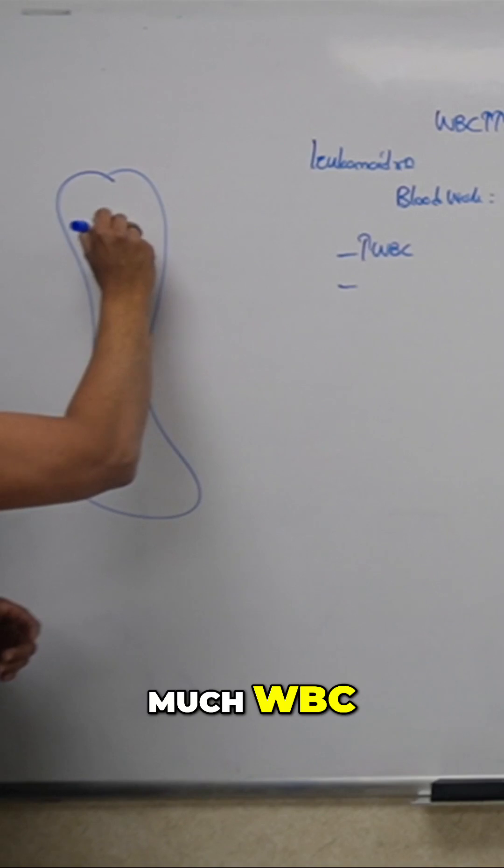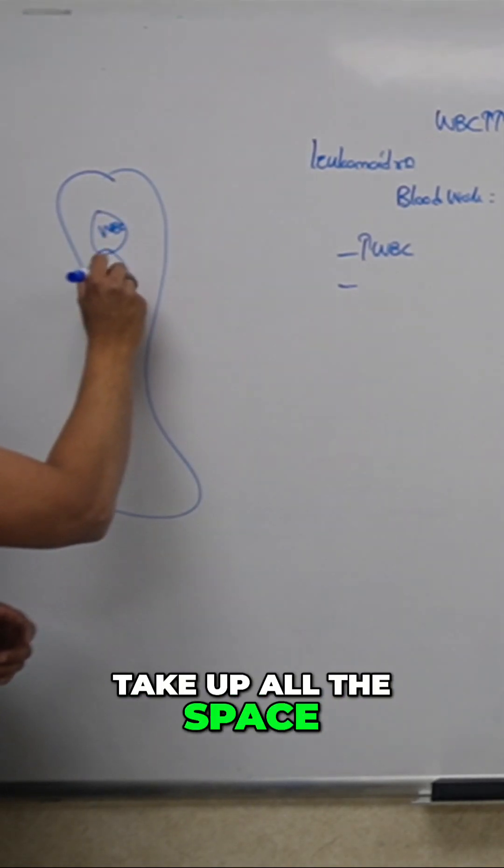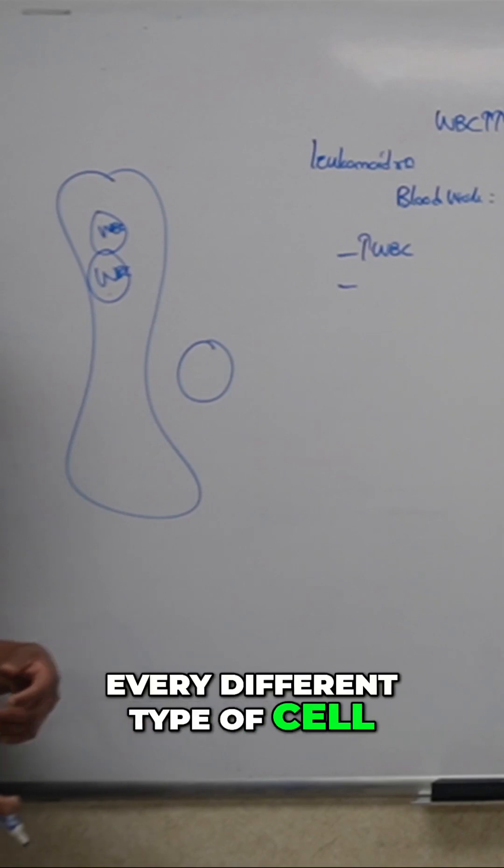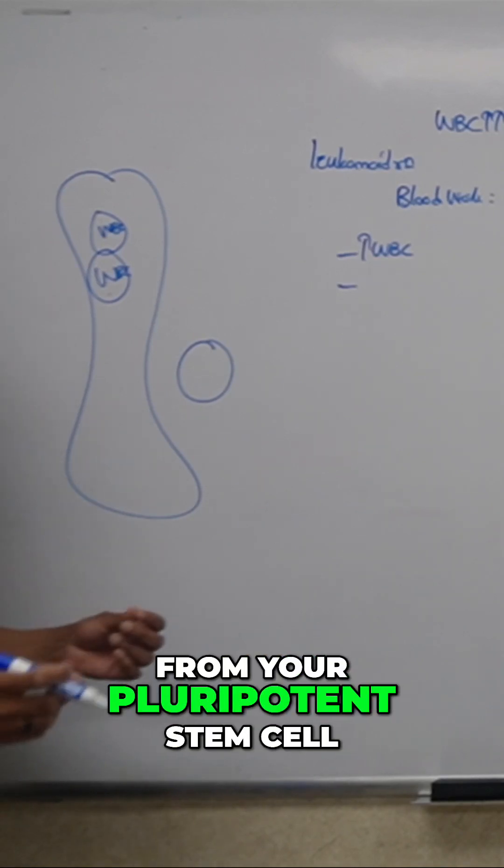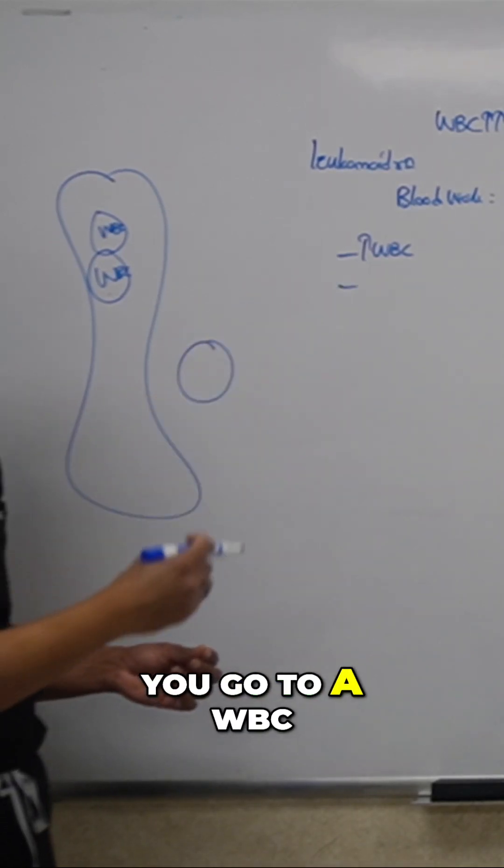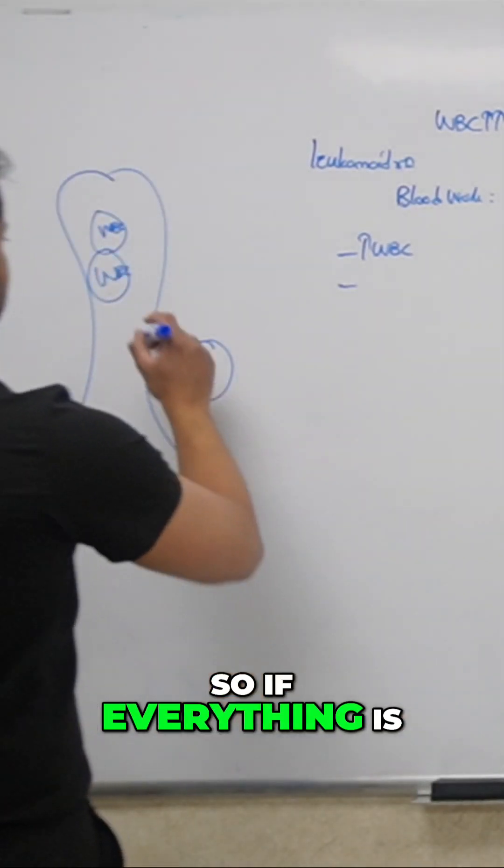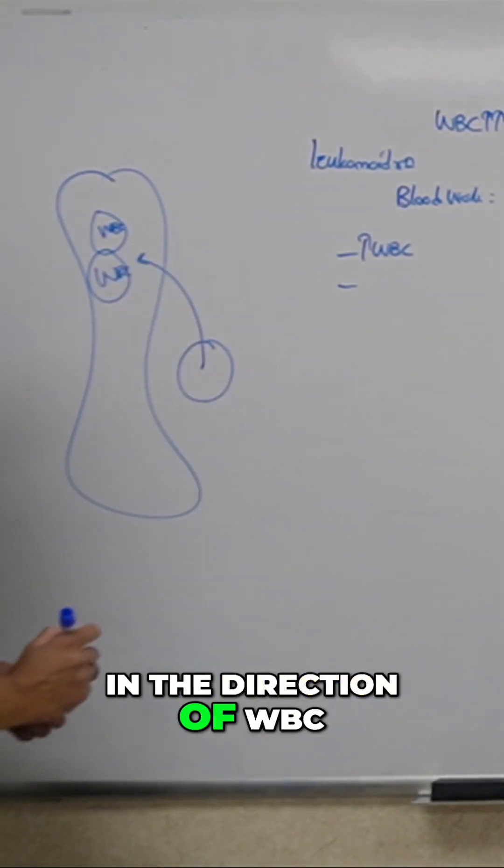Because you go from one basic cell to every different type of cell, from your pluripotent stem cell you go to a WBC, you go to an RBC, you go to a platelet. So everything is getting triggered to go in the direction of WBC.